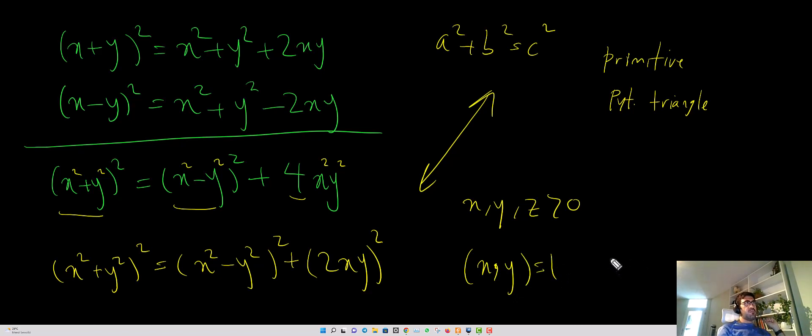And at the same time, one of them, say x, is an even number. Because first of all, x and y cannot be both even because they are co-prime. And they cannot be odd at the same time also. Because if they are odd, this guy and this guy are also even, so you create some common divisors here. So, accepting this result, we can count the number of triangles.